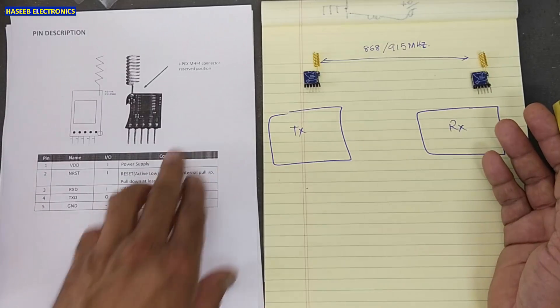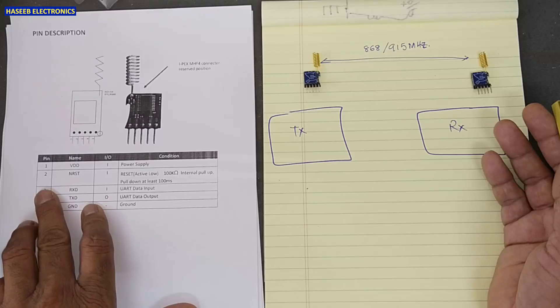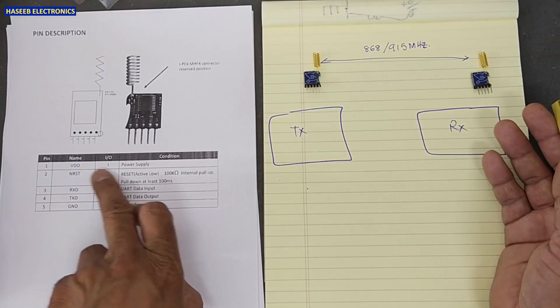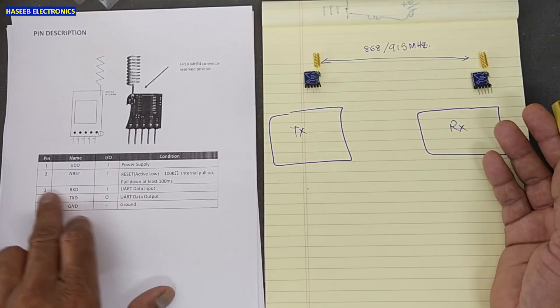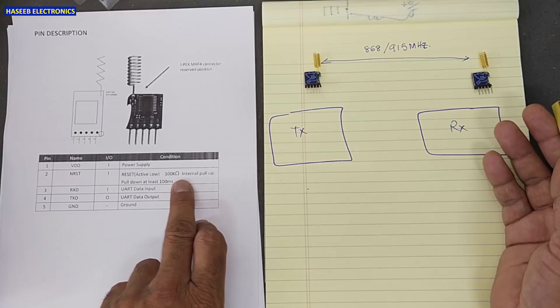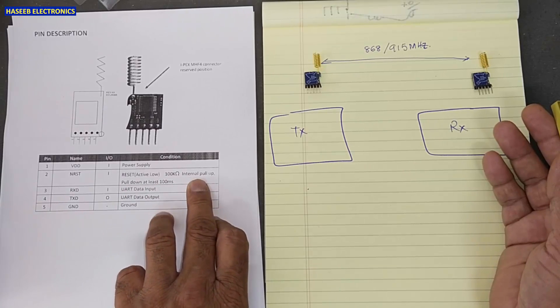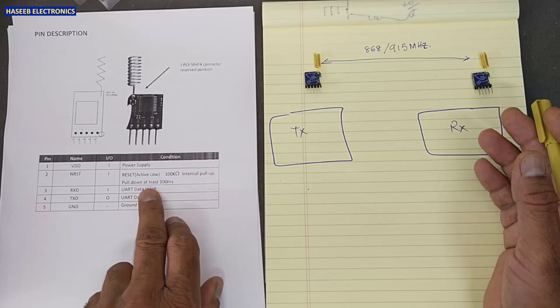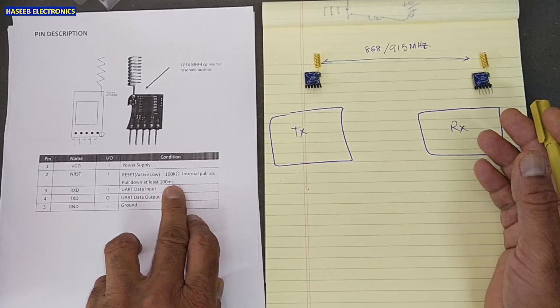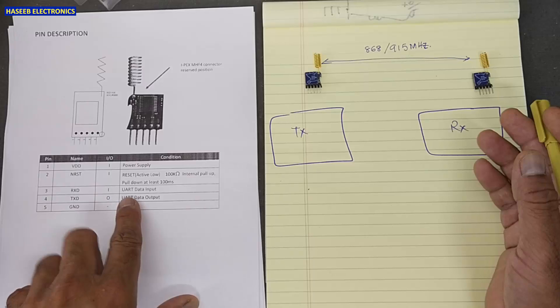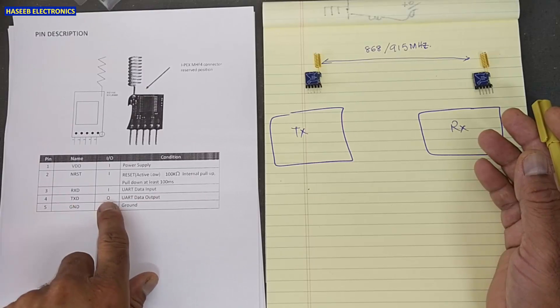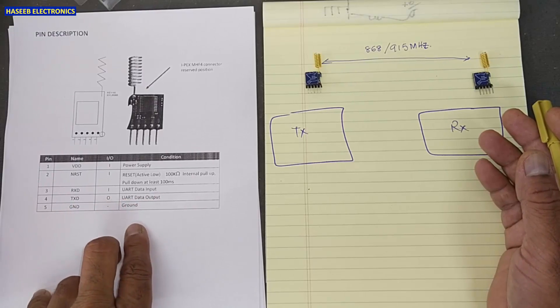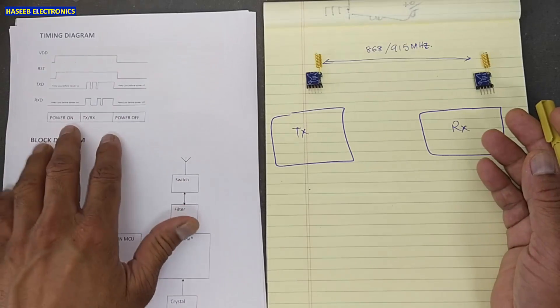So in the datasheet, here is the pinout. Pin number one VDD that is supply voltage input pin. Reset pin and it has 100 kilo ohm internal pull up. Pull down at least 100 milliseconds. And receiver RXD, UART data input and TXD output, UART data output. Ground. Here is the timing diagram.